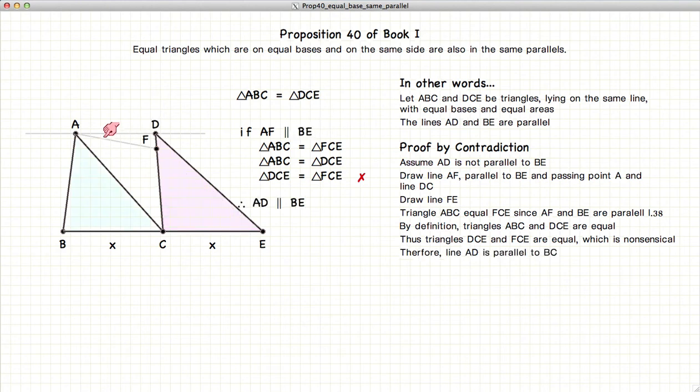And we are left with that AD is parallel to BE. So thus we have demonstrated two triangles on the same line, same base, same area, implies that the line joining the vertices will be parallel to the line of the bases.